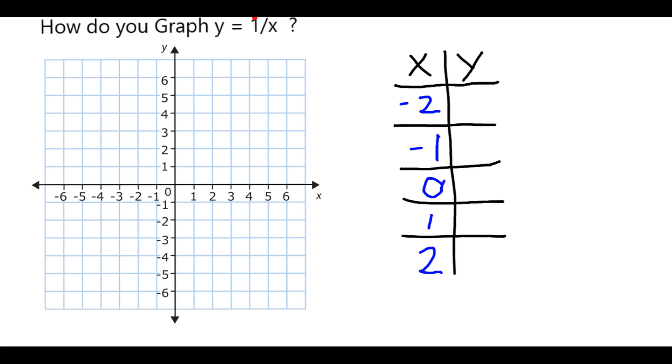If I put negative 2 into this equation, then I'm gonna get y is equal to negative 1/2. If I put in negative 1, I get negative 1. I'm gonna skip 0 for a second. If I put in 1, I get 1, and if I put in 2, I get 1/2. So now I've graphed all the values which correspond to these x-y pairs.